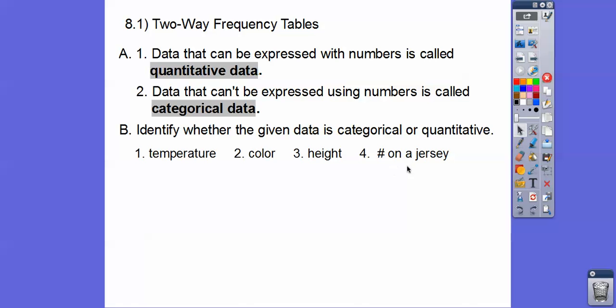How about numbers on a jersey? Well, they're numbers and this is kind of deceiving, but if you average the numbers on say a basketball team, that wouldn't make any sense. So actually, this one's categorical right here. So just be careful.